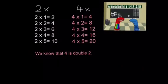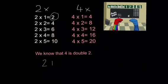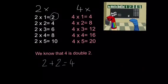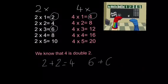So if we look at 2 times 1 equals 2, then we know 4 times 1 is double that answer. So what's double 2? Double 2 is 4. If we do 2 times 3 equals 6, then 4 times 3 is double 6, which gives us 12.